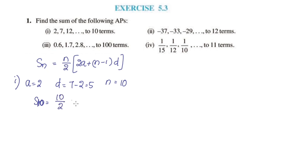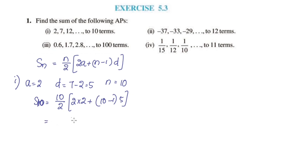We have N=10, so it is 10 by 2 into 2A. A is 2, N is 10, and 10 minus 1 into D is 5. This equals 10 by 2, which is 5.